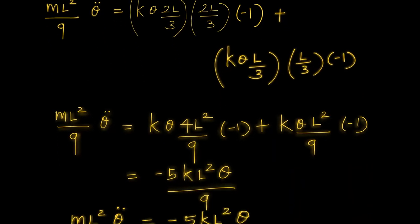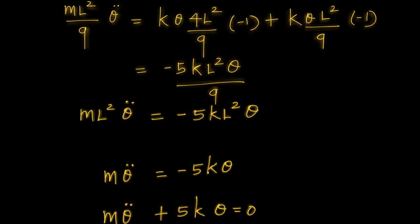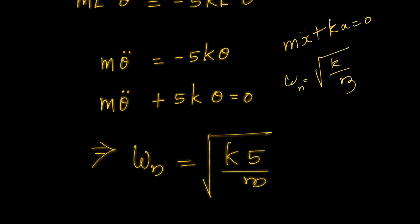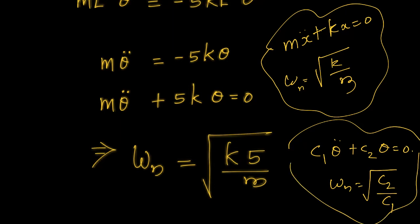After simplifying the mathematics, we arrive at ML²·theta_double_dot = −5KL²·theta, which simplifies to m·theta_double_dot + 5K·theta = 0. The natural frequency of the system is therefore omega_n = √(5K/m). In general, whenever you have an expression C1·theta_double_dot + C2·theta = 0, the natural frequency is √(C2/C1). Thanks for watching.